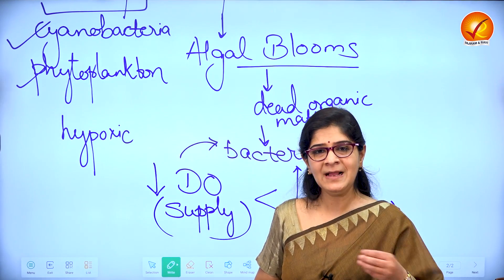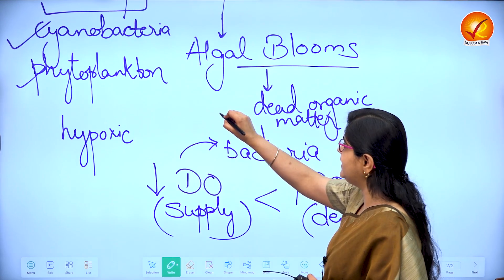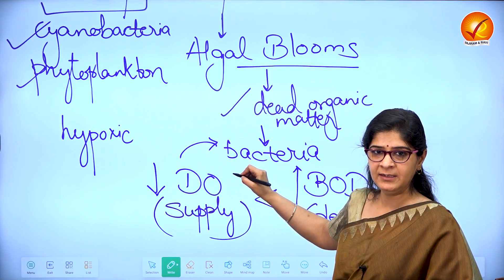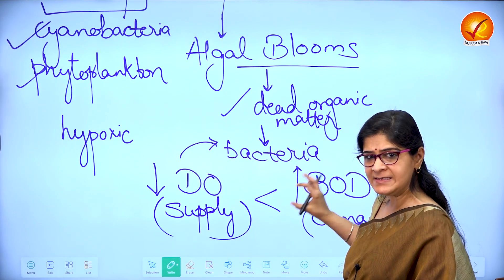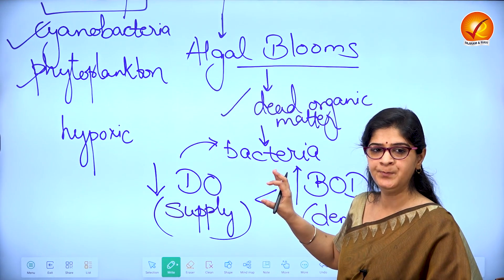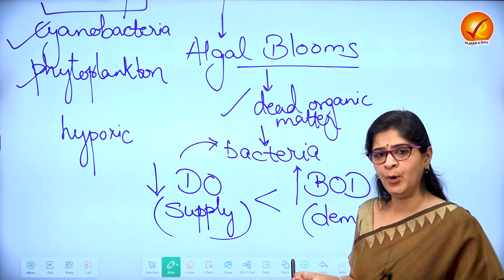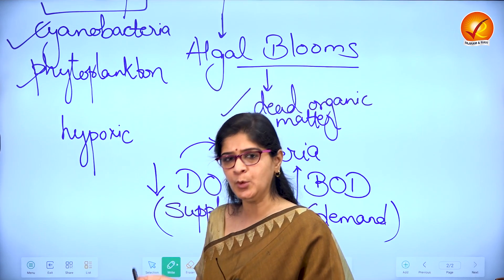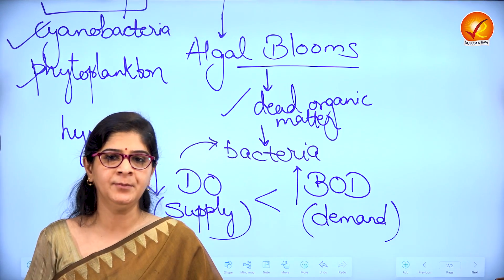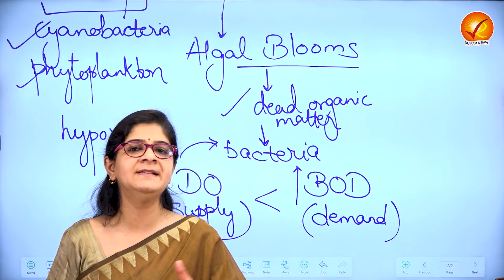As the bigger organisms start to die, the dead organic matter again increases, bacteria proliferates further, BOD increases further, and dissolved oxygen decreases further. This process may continue up to a point where the entire life supported by that water body collapses. When that happens, we say this is a dead zone.